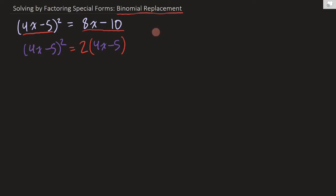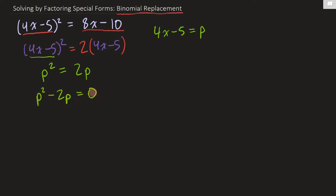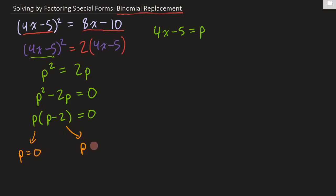So what we can do is take our 4x - 5 and say we're going to replace that with the variable p. Then (4x - 5)² becomes p squared, and 2(4x - 5) becomes 2p. Now we've got a really simple quadratic that we can factor very easily. We bring it to the left hand side: p² - 2p = 0. We can common factor a p, so we get p(p - 2) = 0. This gives us two solutions: p = 0 or p = 2.